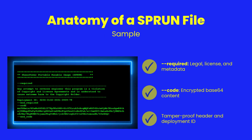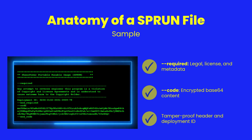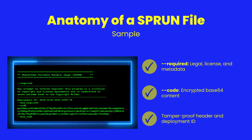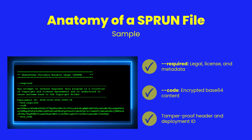An .sp-run file has a clean, layered structure. The required section contains license and legal metadata. The code section holds your encrypted, base64-encoded program. The header, deployment ID, and metadata are all hashed, so tampering with even one character breaks the file.